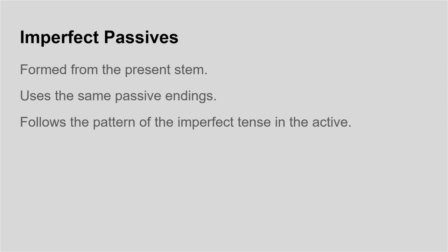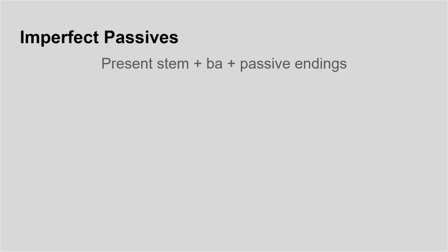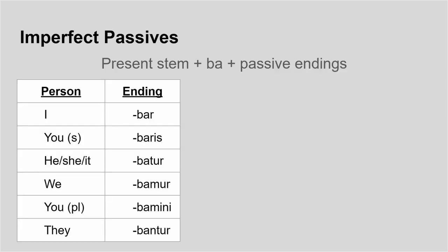I'm still expecting my 'ba' from the imperfect tense. So the endings are: bar, baris, batur, bamur, bamini, bantur. All of those still have my 'ba' and my passive endings.